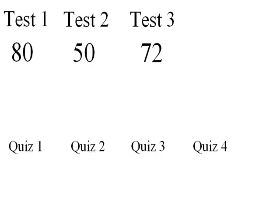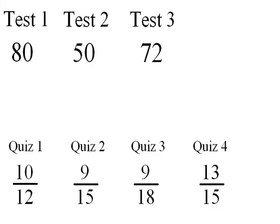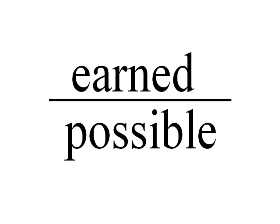Say we have three tests and your grades are 80, 50, and 72. Let's also say that we have four quizzes, each out of about 15 points, with the points you earn on each quiz as shown. Your quiz average is computed in the usual way of earned points divided by possible points.